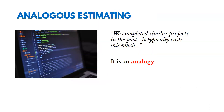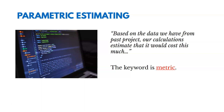With analogous estimating, we might say we completed similar projects in the past and it typically costs this much — it's an analogy. With parametric estimating, we might say that based on data from a past project or calculations, we estimate it would cost this much. The key word here being 'metric' — it's some quantitative analysis using an algorithm.